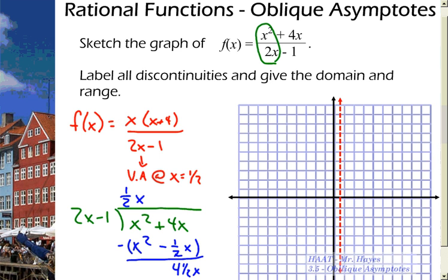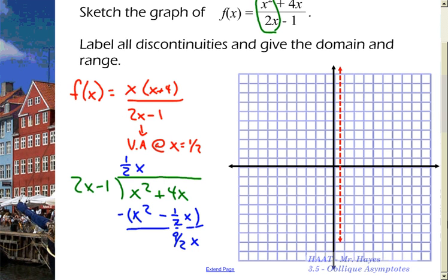Or let's call it 9 halves x. So the question is what do I multiply 2x by to make it equal to 9 halves? That would be 9 fourths. So you get 9 fourths times that, you get 9 halves x, and then you're going to get minus 9 fourths.